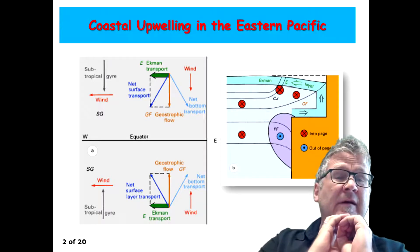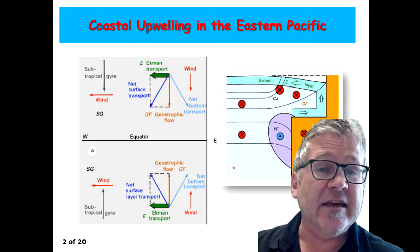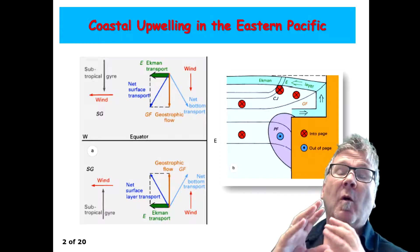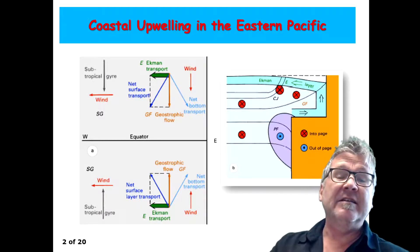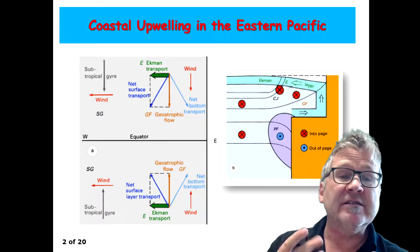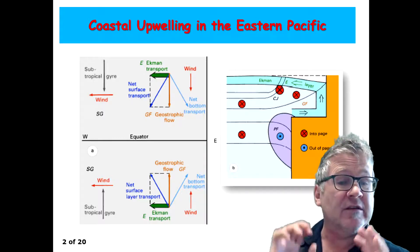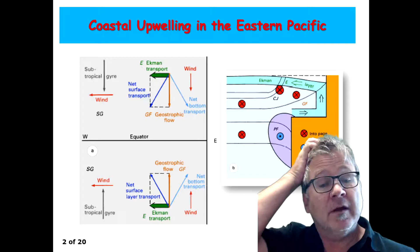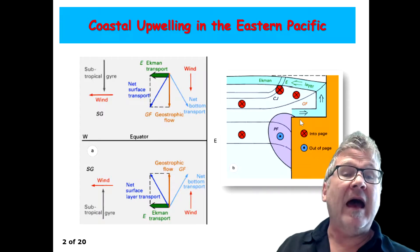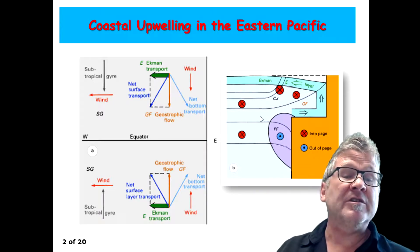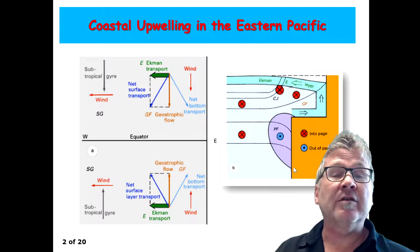In these upwelling regions in the eastern Pacific Ocean, what you also get is, in addition to the upwelling circulation, which a key feature is the upwelling jet, the geostrophic flow, is the so-called undercurrent, which flows along the shelf break.